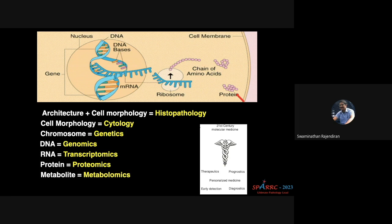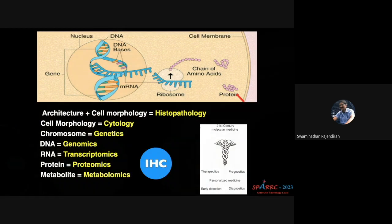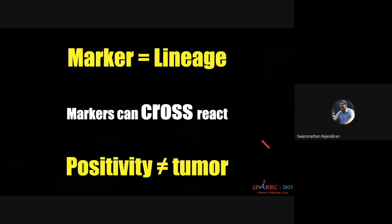When you read the metabolites it is known as metabolomics. Genetics, genomics, transcriptomics, proteomics, and metabolomics are very important for personalized medicine in the 21st century. Previously we paid more attention to histopathology and cytology, but now we are more into omics. IHC represents either the transcriptomic products, the proteins, or the metabolomics — this is the part highlighted by IHC.